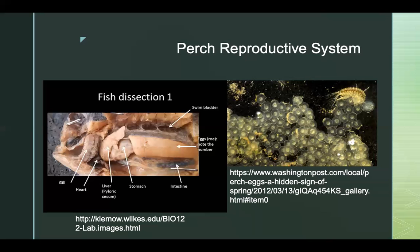As you can see with the fish dissection, where the eggs are located is the ovary — this is a female perch — and where the testes would be located is right where the ovary is.